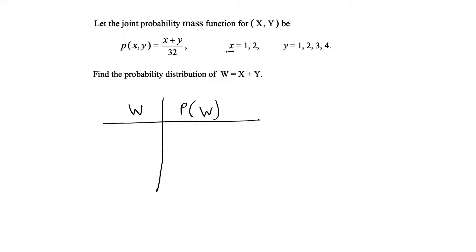We are given the possible values of x and y, and we know that w is defined as x plus y. So we can figure out all the possible values of w by adding all the possible values of x and y. x can be 1 and y can be 1, so the smallest possible value of w is 2. Then w can be 1+2=3, 1+3=4, and 1+4=5.